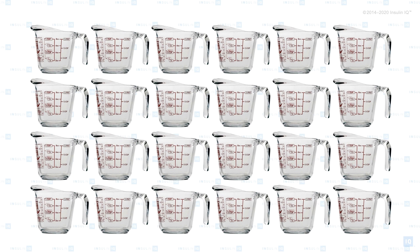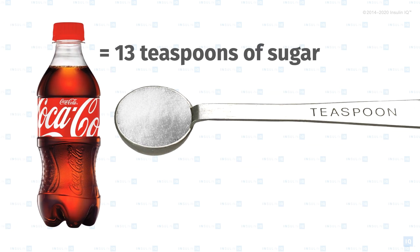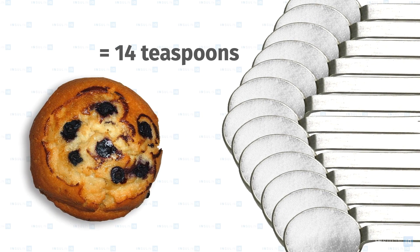So what happens when we drink a Coke and dump 13 teaspoons of sugar into our bloodstream, or we eat a blueberry muffin and dump 14 teaspoons of sugar into our bloodstream? It creates a huge spike in our blood sugar level.